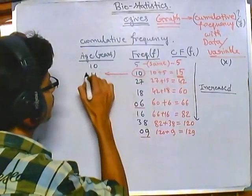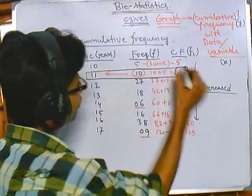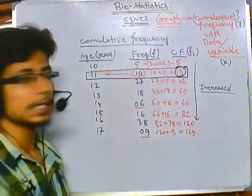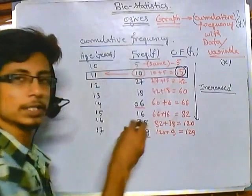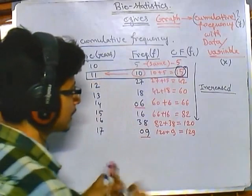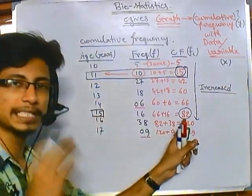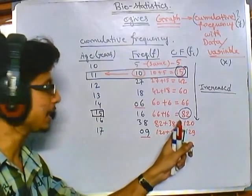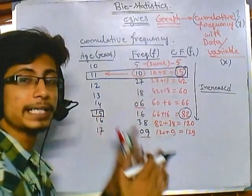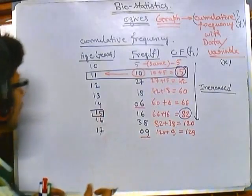Once we have the cumulative frequency, we can interpret it directly. For example, the cumulative frequency for age 11 is 15, meaning there are 15 people in the population with age below 11. Similarly, the cumulative frequency 82 corresponds to age 15, meaning there are 82 people with age below 15 years. That is why cumulative frequency is important.